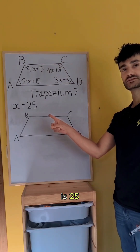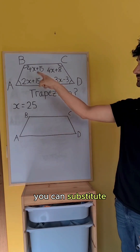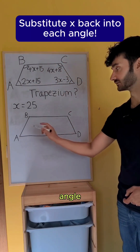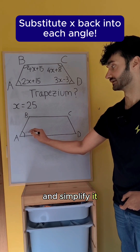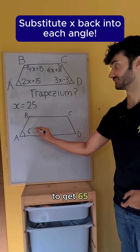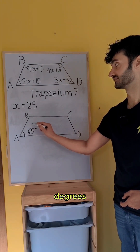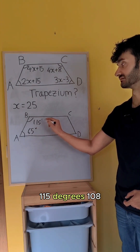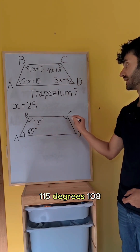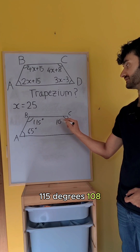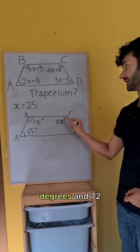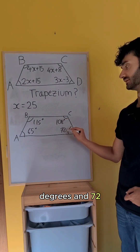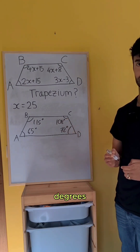Knowing that x is 25, you can substitute that back into each of these angles and simplify to get 65 degrees, 115 degrees, 108 degrees, and 72 degrees.